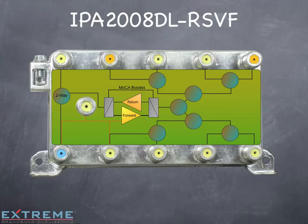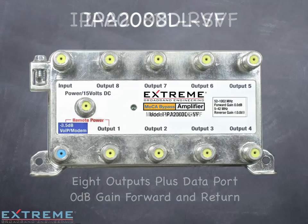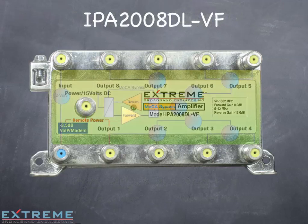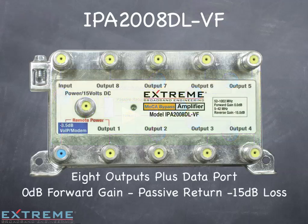The fifth bypass MOCA amplifier is an eight output amplifier with a data port and will allow the MOCA signal to flow between all ports. It has 0 dB of gain in the forward and return. The sixth is an eight output data plus amplifier with passive return, with 0 dB of gain in the forward and passive return with 15 dB of loss.